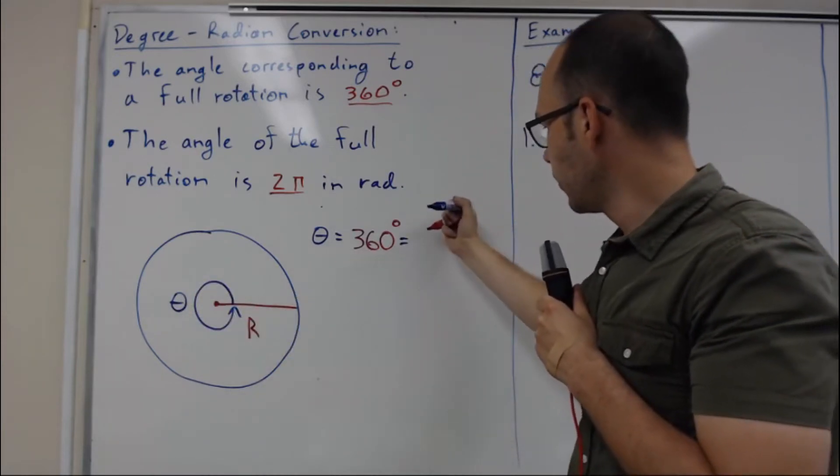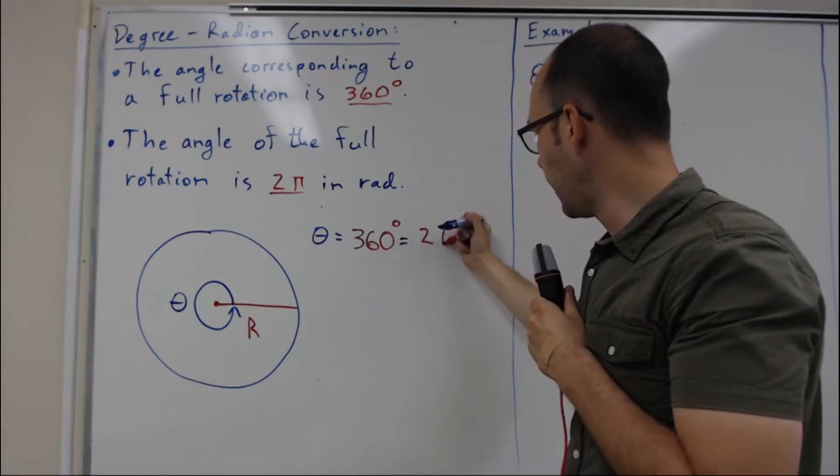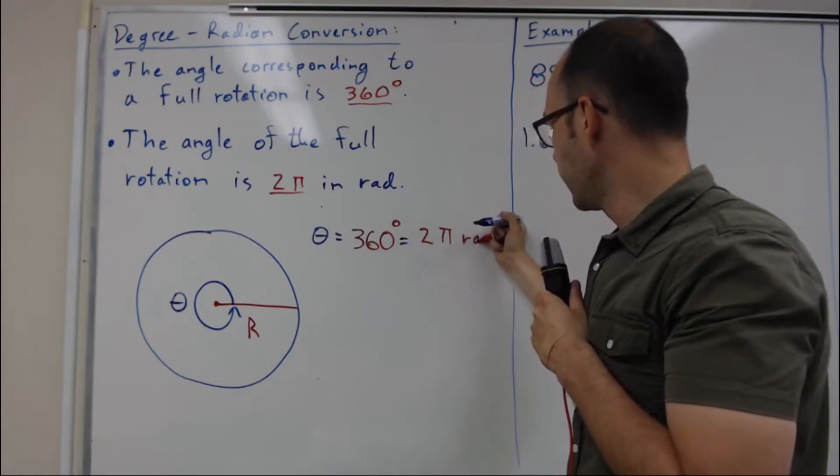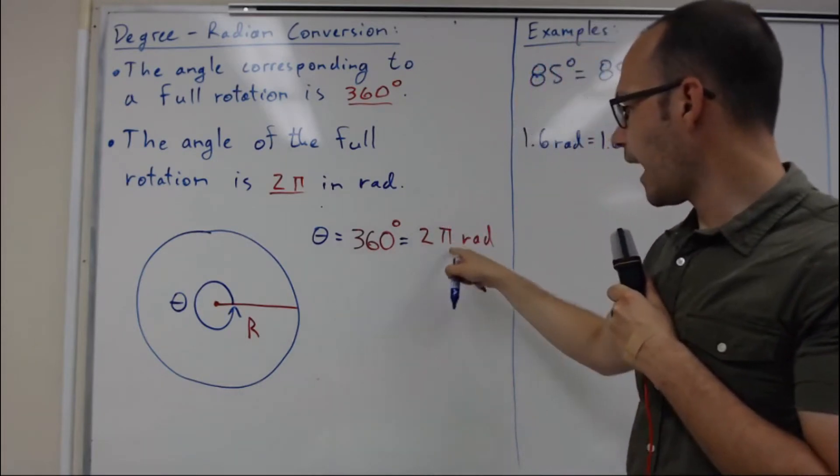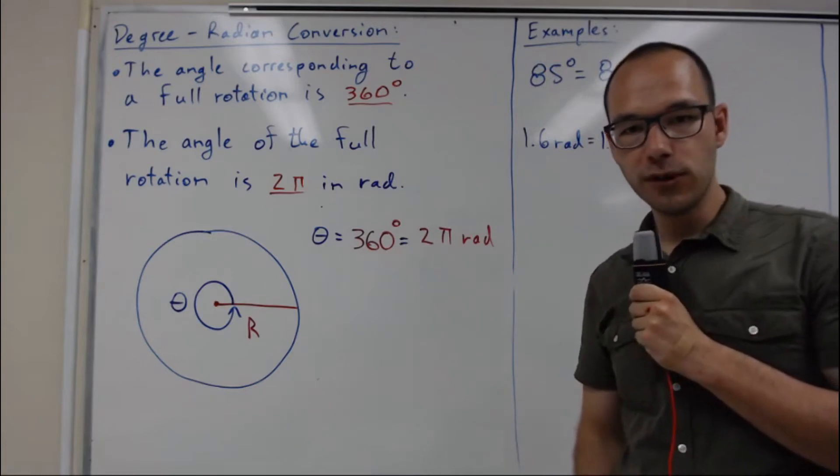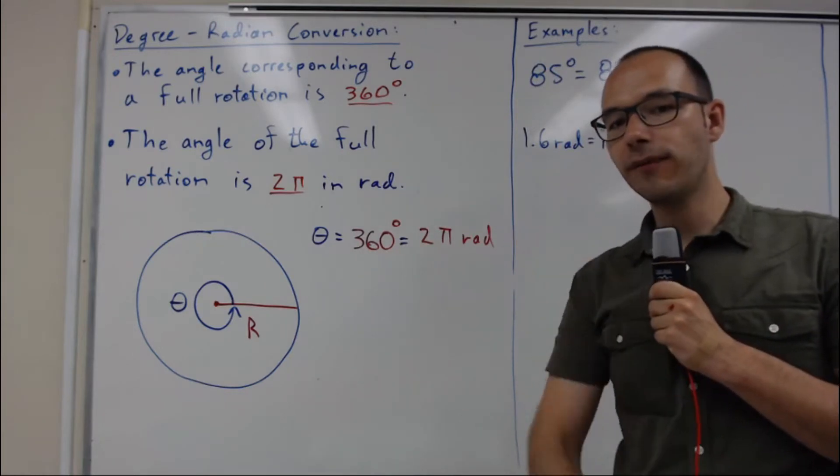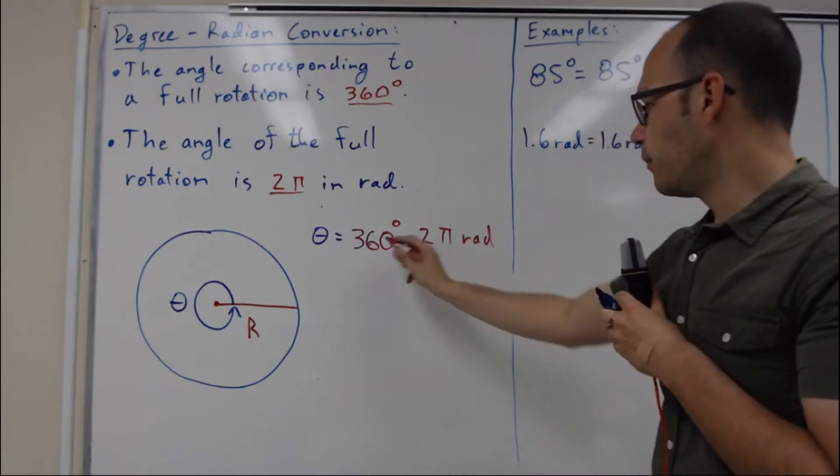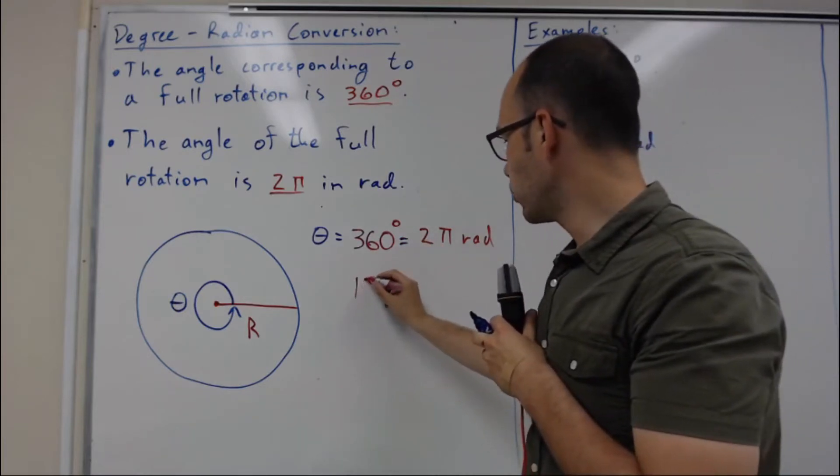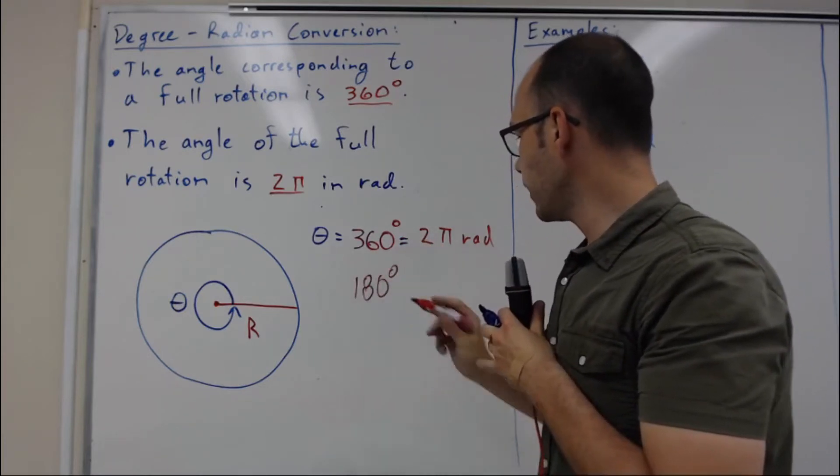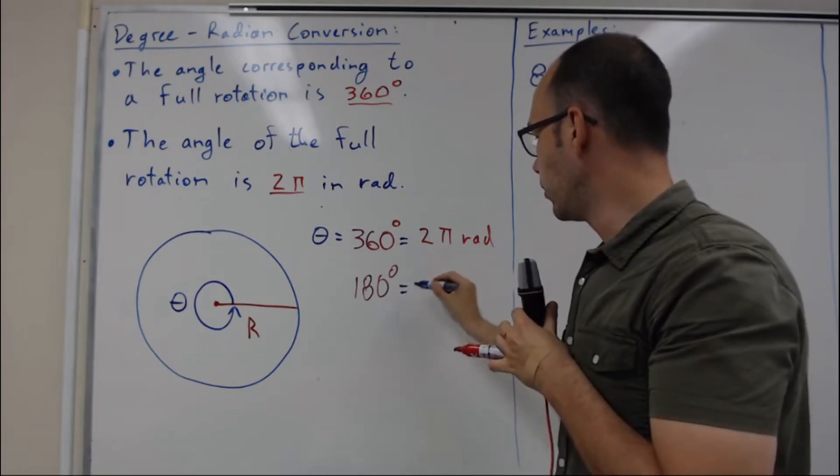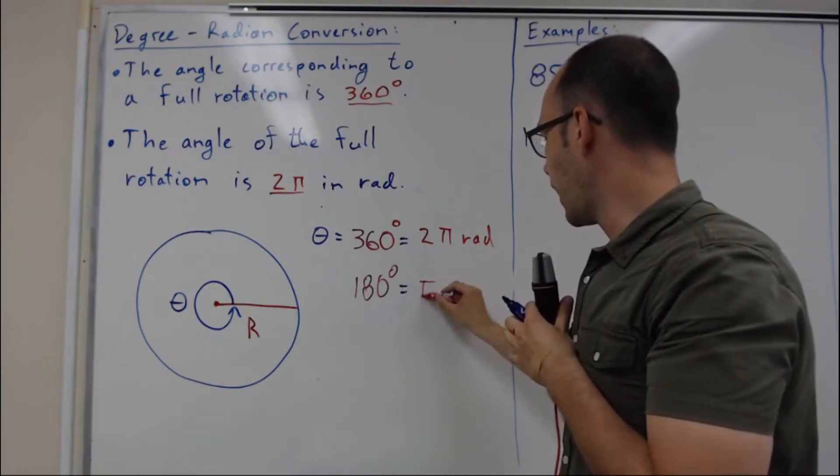We already have a conversion factor, but we can simplify it by dividing both sides by 2. This gives us 180 degrees equals π radians.